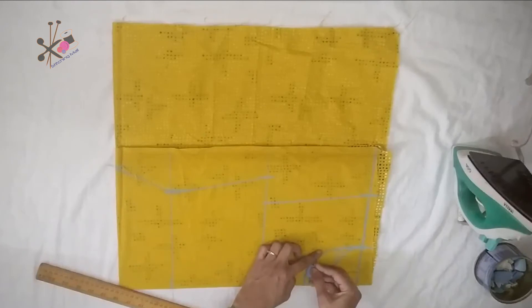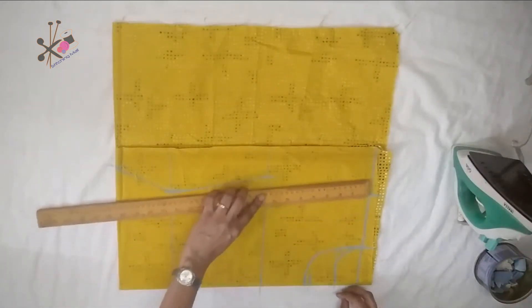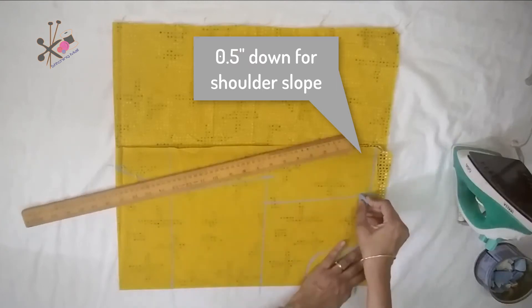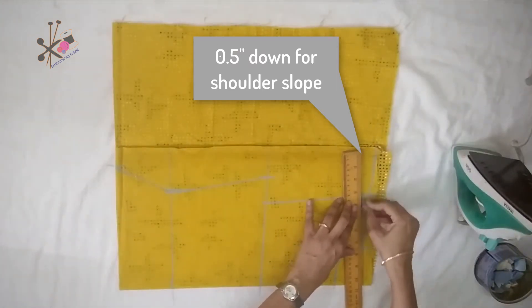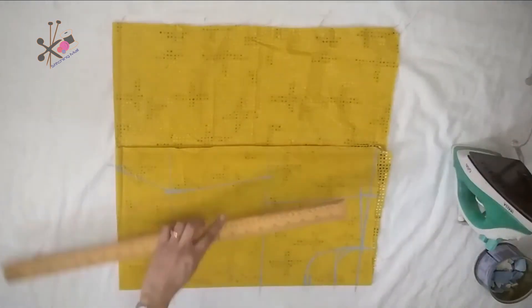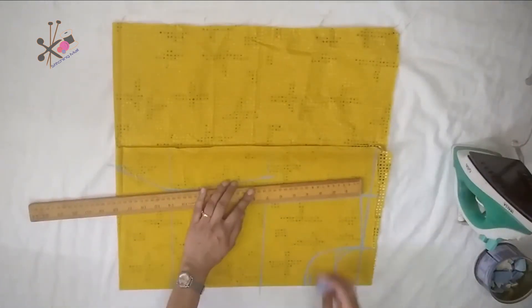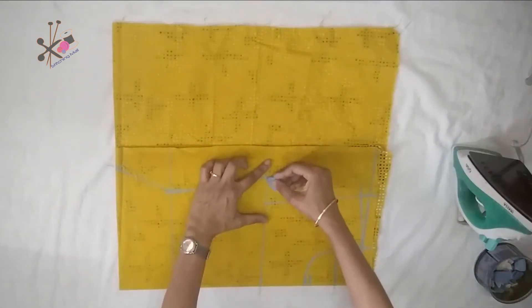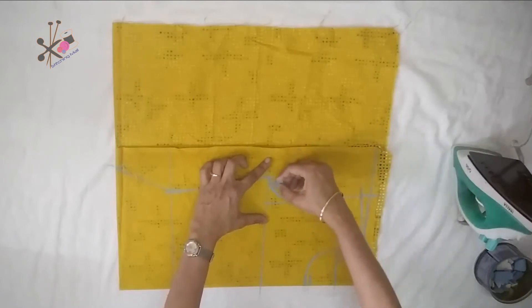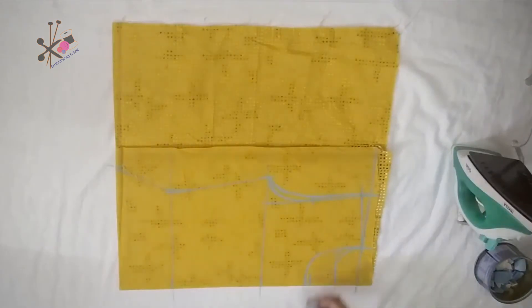There are many methods to make a neckline, and this is one of the simplest methods. We take half inch down for shoulder slope. If your shoulders are very sloped, then you can take 3/4th of an inch. We mark on the line for front armhole and half inch out for the back armhole.